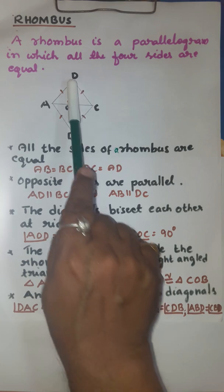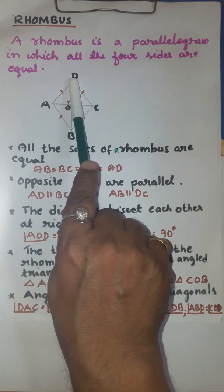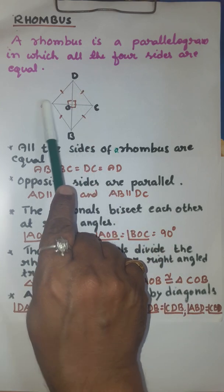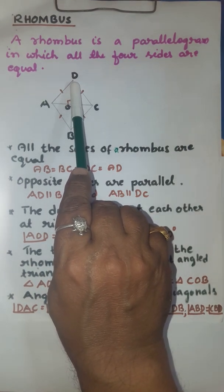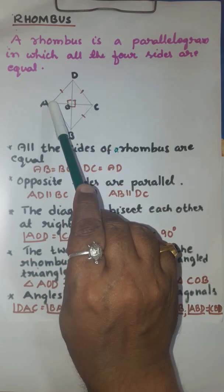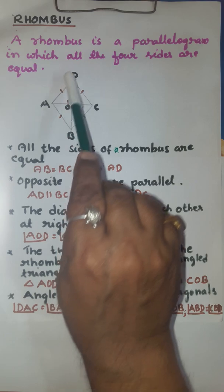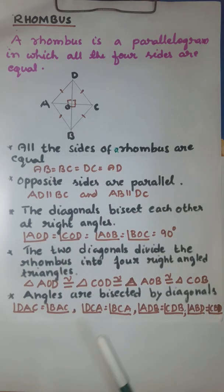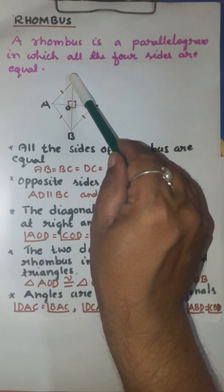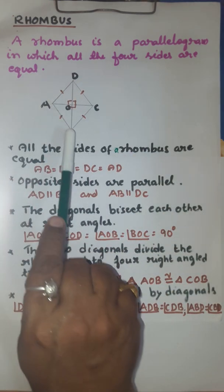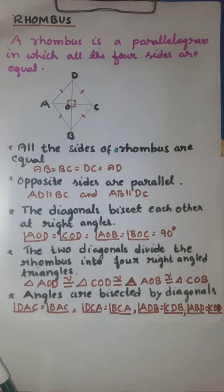Similarly, diagonal BD bisects angle ADC at point D into two angles: angle ADB and angle CDB. At the other end, angle ABC is bisected by the same diagonal BD. The bisected angles are angle ABD and angle CBD, which are equal. So the angles are bisected by diagonal BD as well.